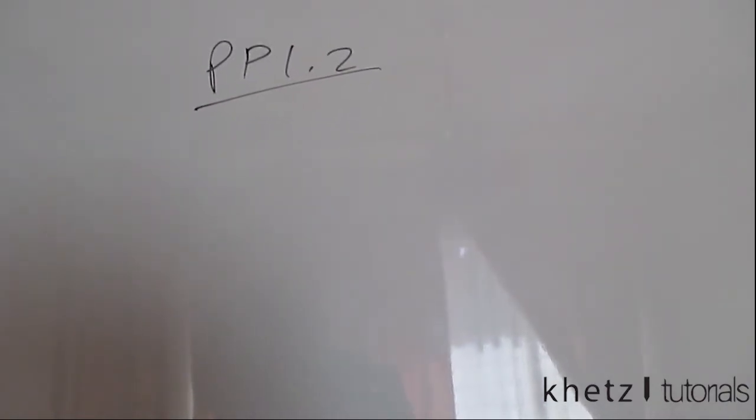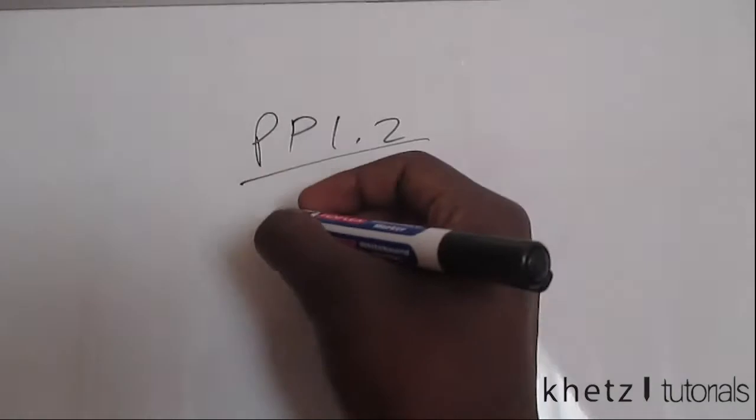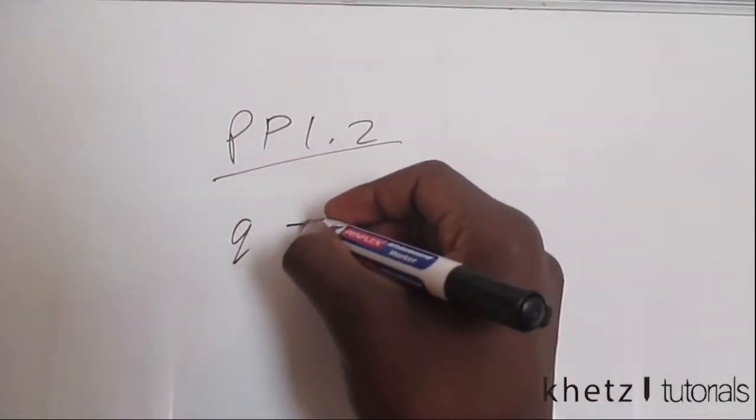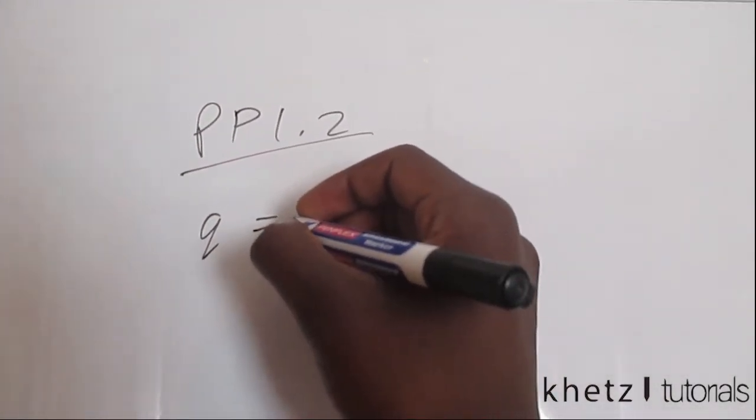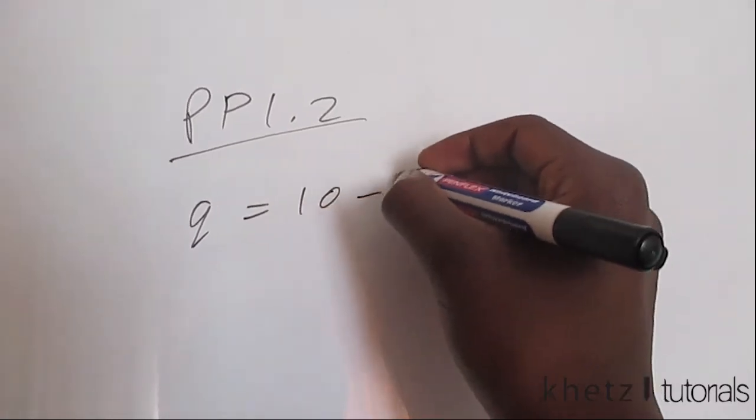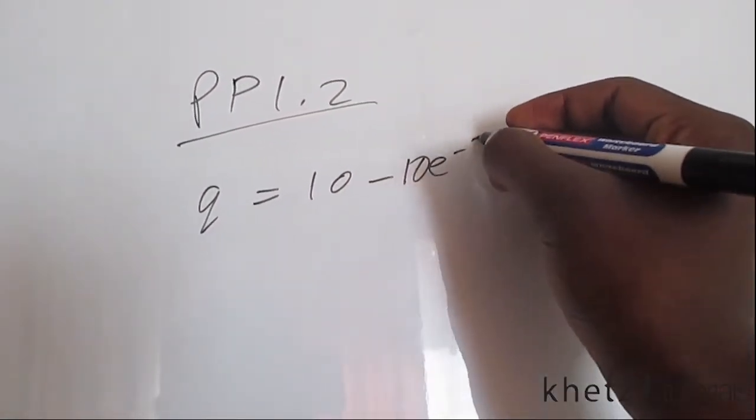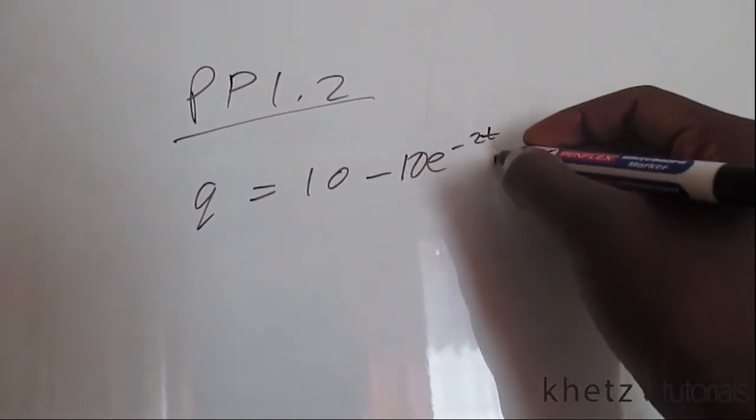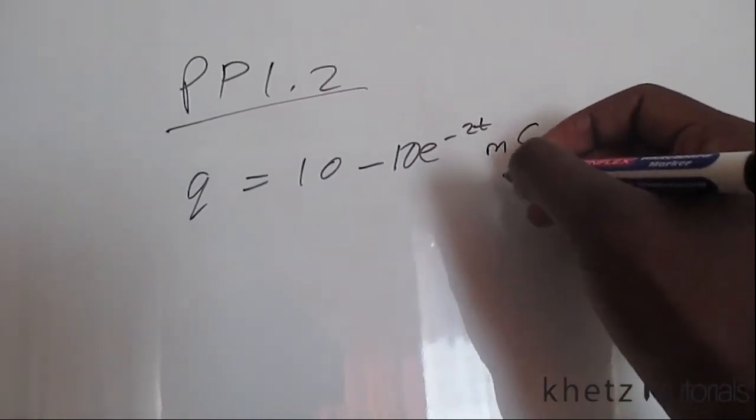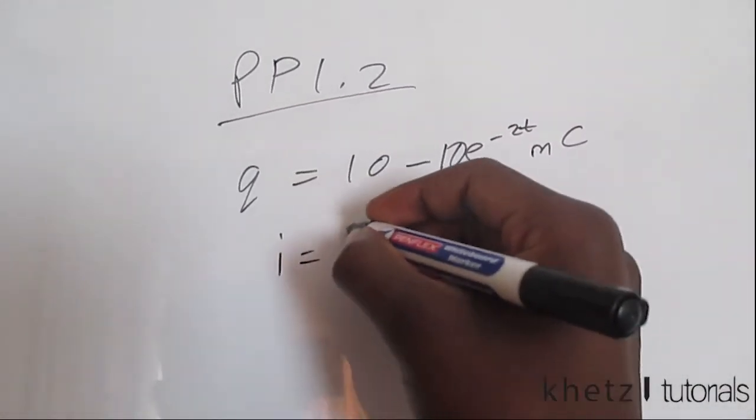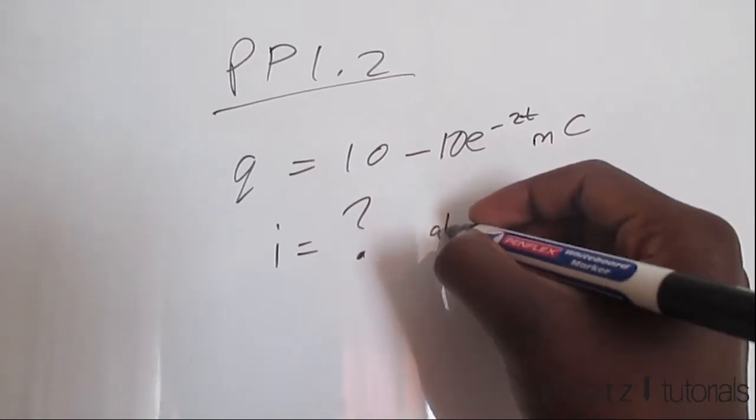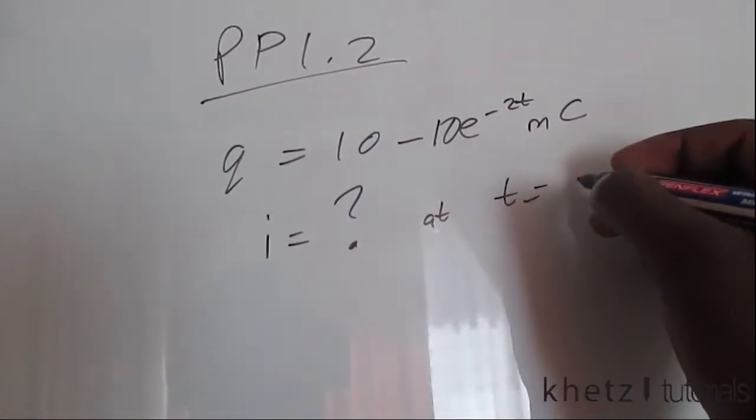Welcome back to Khetz Tutorials. We're going to be doing practice problem 1.2. If the charge entering a terminal q equals 10 minus 10e to the minus 2t microcoulombs, find the current at t equals one second.